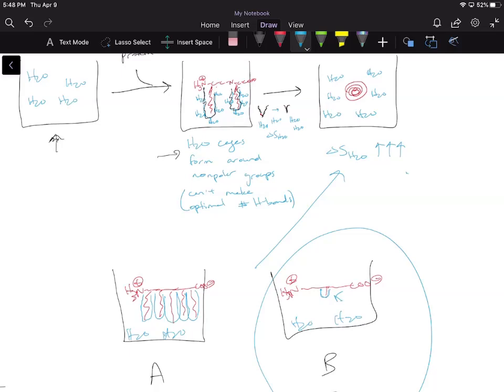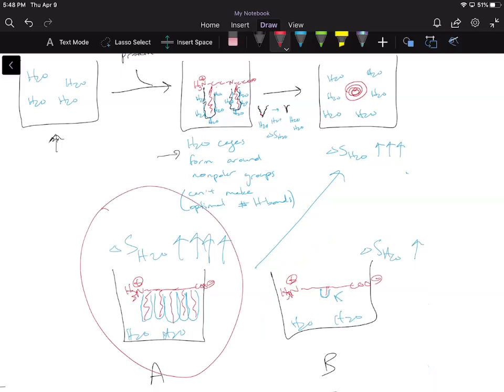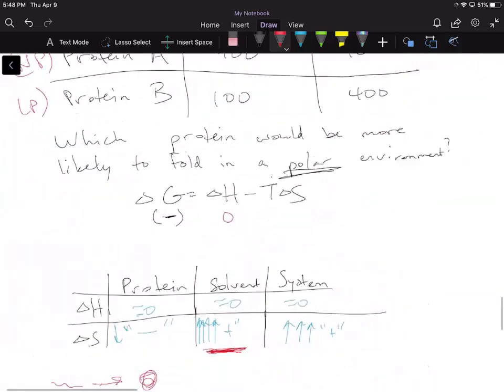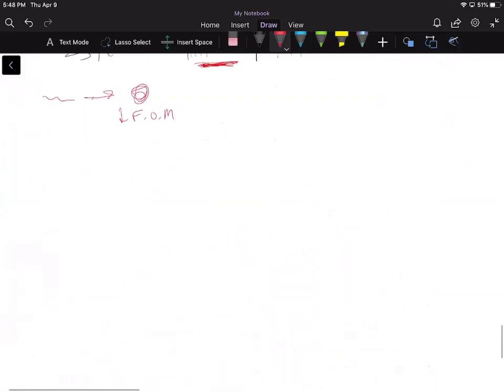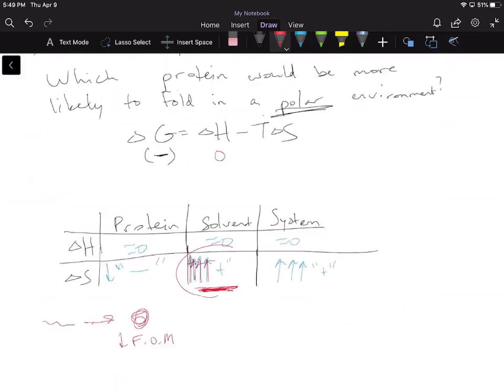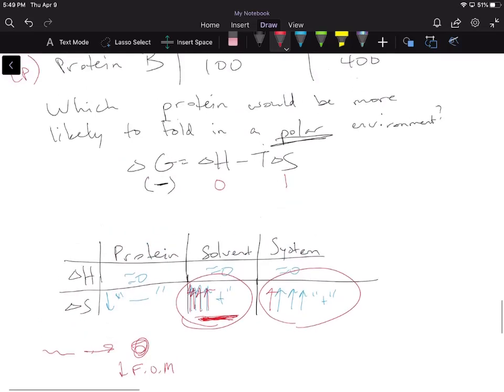Well, since protein A has way more nonpolar regions, it had more water cages. So the delta S of H2O in this case is significantly greater than the delta S of H2O in this case. So which one do you think is more likely to fold then? It's actually going to be protein number A because it has more nonpolar regions. So we can even more greatly increase the delta S of water. And if we can make the delta S of water even larger, because we can make this a much bigger number, the bigger we can make this term, the bigger we can make this term. And then we can make overall the delta S more positive over here to make the delta G. So this increases this, which increases the delta G or makes it more negative. And that helps our protein fold.